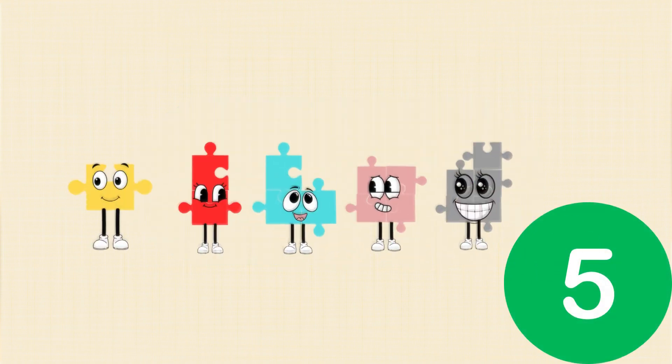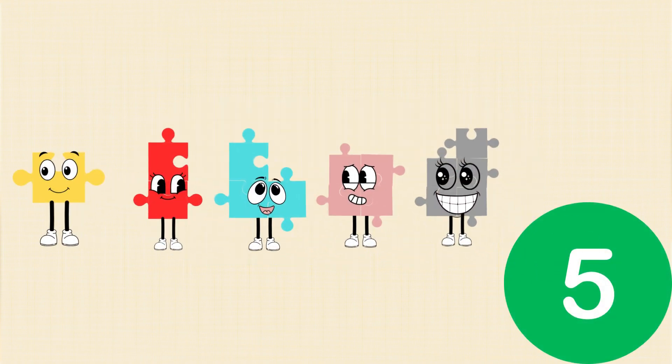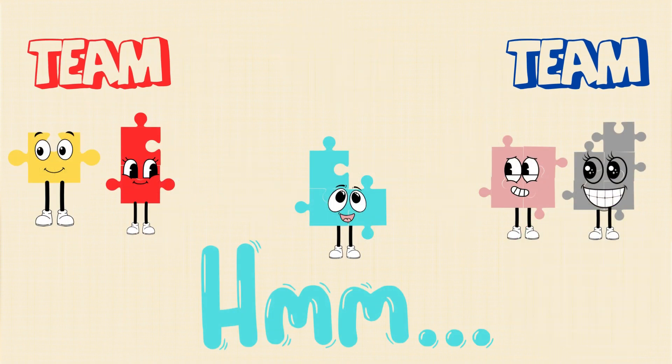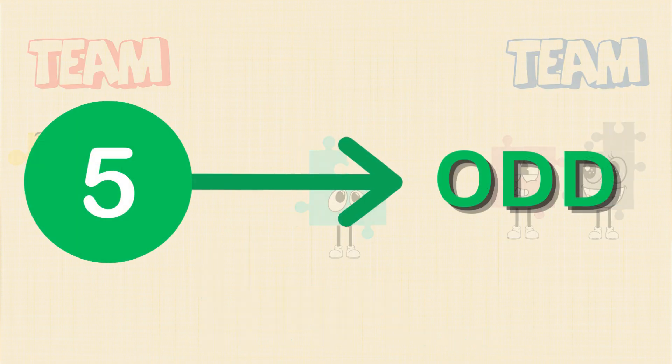Now let's try with five. Can we split them into equal teams? Oh no! One buddy is left out. That means five is odd.